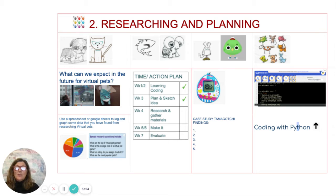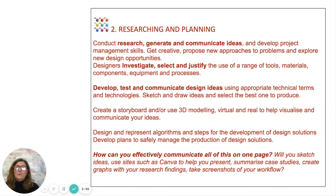Next comes researching and planning. This is where you will log the work that you're doing in the unit. It could be that you take some screenshots of work you're doing, even design work or drawings if you are planning the characters that could be in your virtual pet game. It's also a good idea to log some of the learning you've been doing with coding, which can be done through screenshots. Think about how you will present and lay out this page so that it communicates all of the work you've been doing. There's also a list of steps that can tell you specifically the sorts of things that can go on that page.